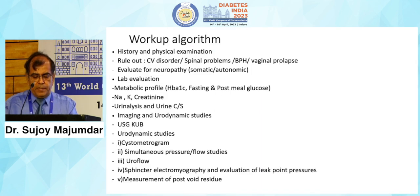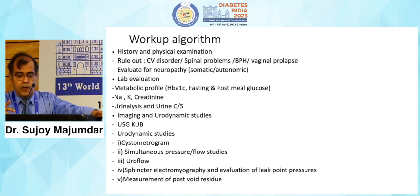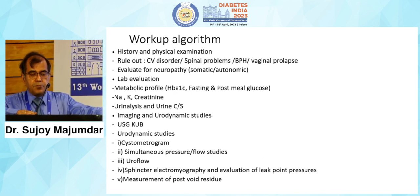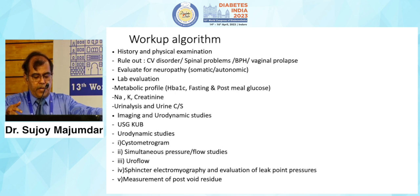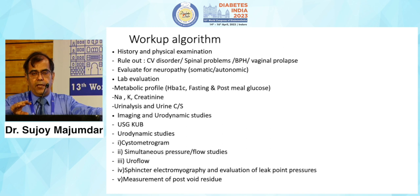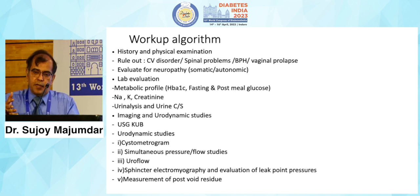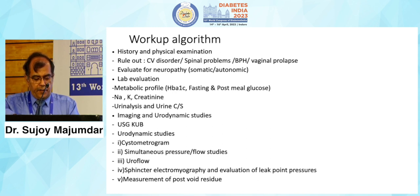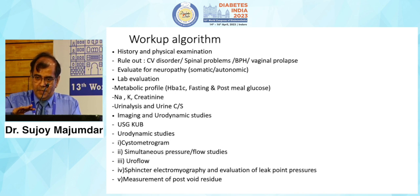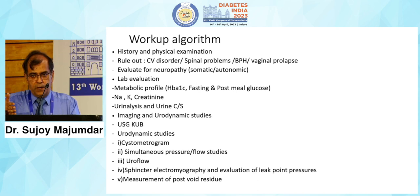To evaluate diabetic cystopathy, start with history and physical examination. Look for symptoms, but rule out cardiovascular disorders, spinal problems, prostatic hyperplasia, or vaginal prolapse. Evaluate for somatic or autonomic neuropathy and look at the metabolic profile — glucose, sodium, potassium, creatinine — and urine examinations. The gold standard is urodynamic studies and KUB ultrasound, which gives an idea of bladder distension. More dynamic profiling comes from cystometrogram, simultaneous pressure-flow studies, uroflow, sphincter electromyography, evaluation of leak point pressures, and measurement of post-void residual urine — best left in the hands of a urologist.